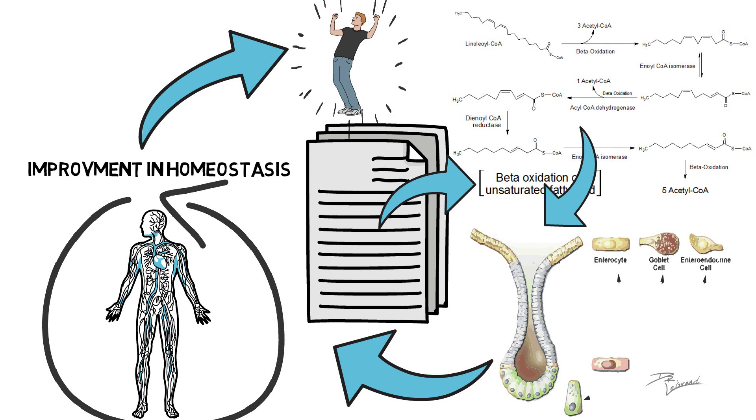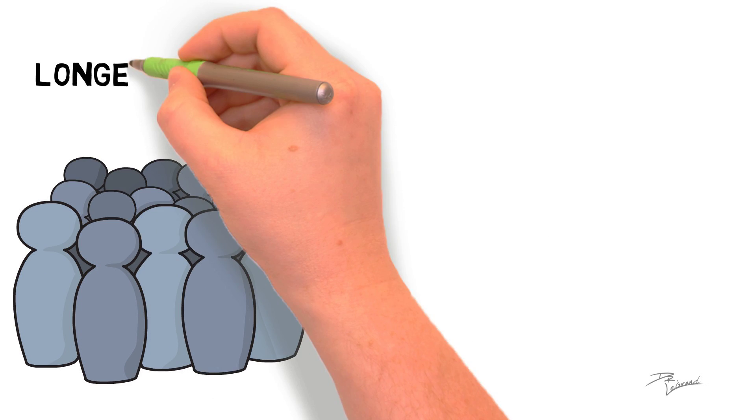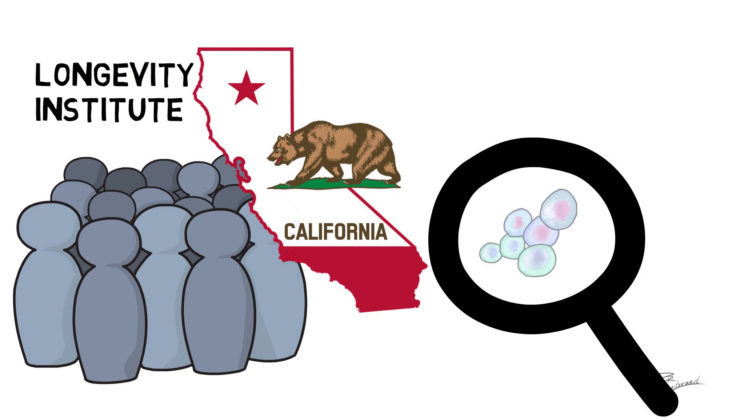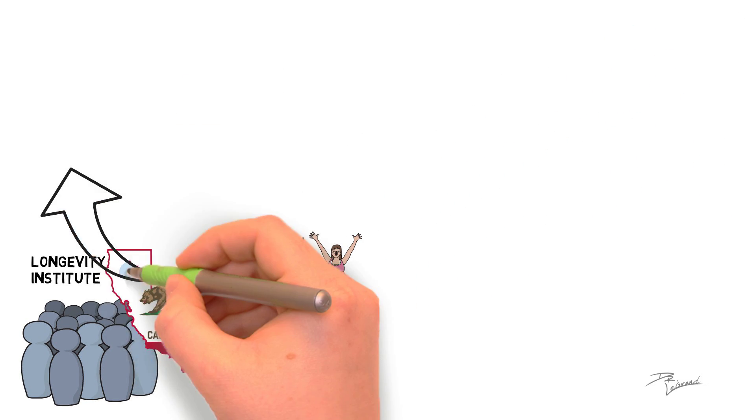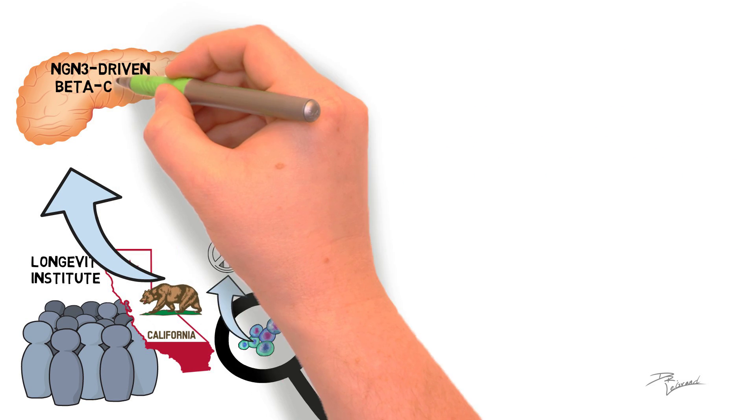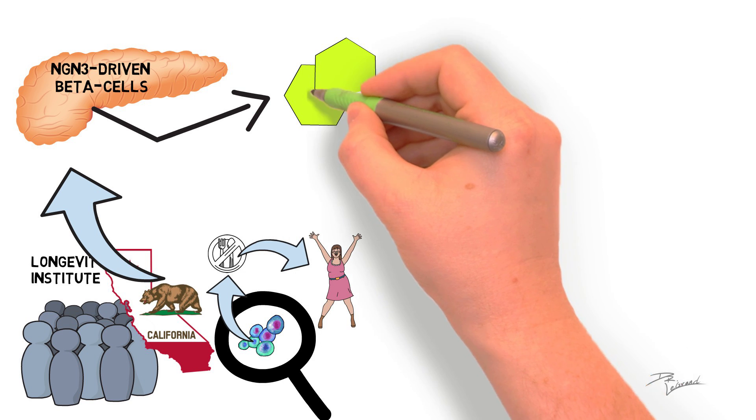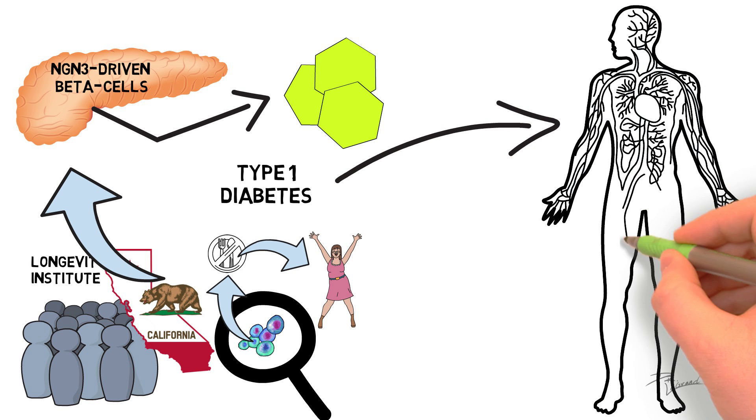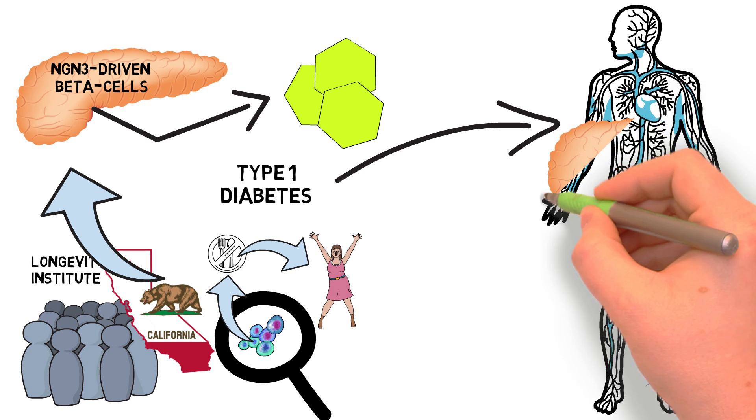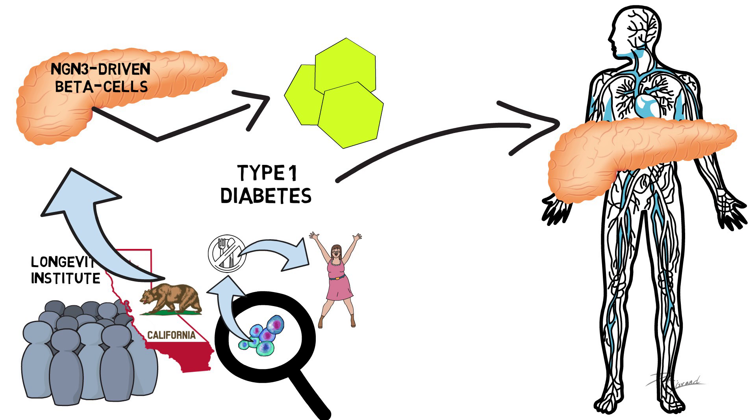In a study led by a team of researchers from the Longevity Institute in Southern California, a breakthrough was made when they discovered certain stem cells could be regenerated through fasting that could potentially assist in the reversal of diabetes. The study found that NGN3-driven beta cells, a specific type of stem cell that is important in producing insulin, could be affected. This is very important in type 1 diabetes because type 1 diabetics do not produce insulin in the body anymore due to not having any pancreatic beta cells.